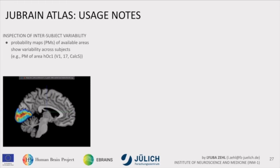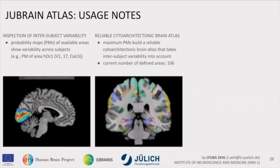For the usage, you have inspection of inter-subject variability and you can look at probability maps. This is the probability map of V1, called in the JuBrain 'area HOC1' — human occipital area 1 — which corresponds to V1, Brodmann area 17, or the calcarine sulcus. This provides a relatively reliable cytoarchitectonic brain atlas. In version 18 we have 106 areas defined, most of them cortical and a few subcortical. Around 30 more areas are currently in the making, and perhaps 20 more after that.